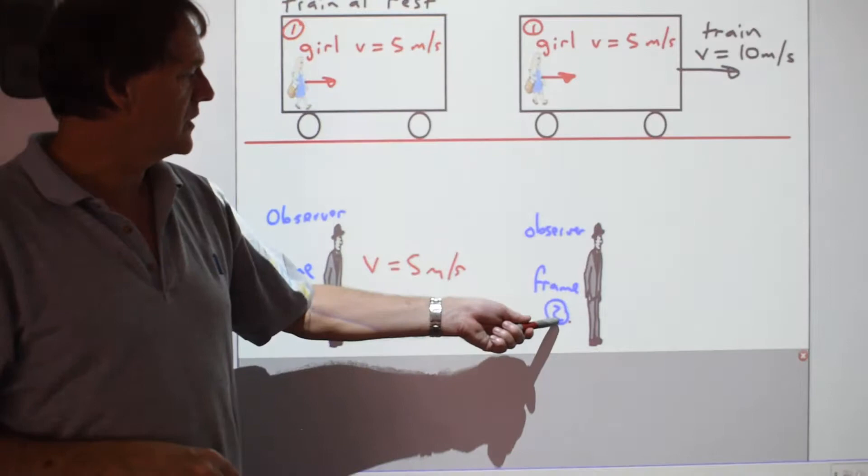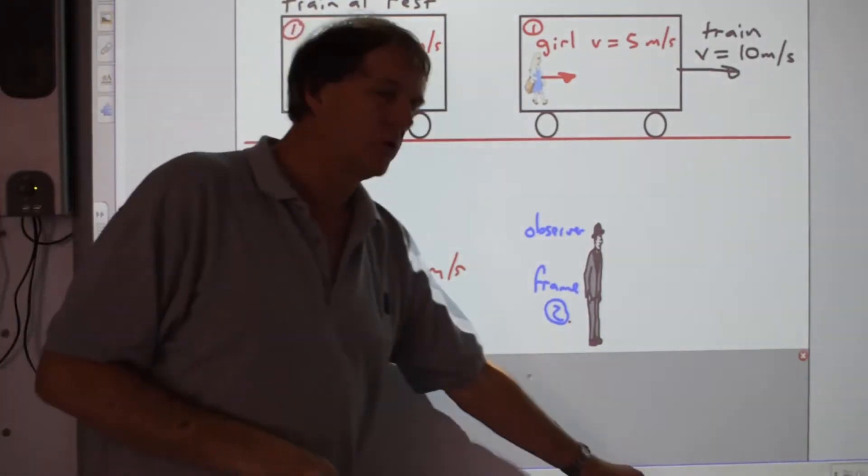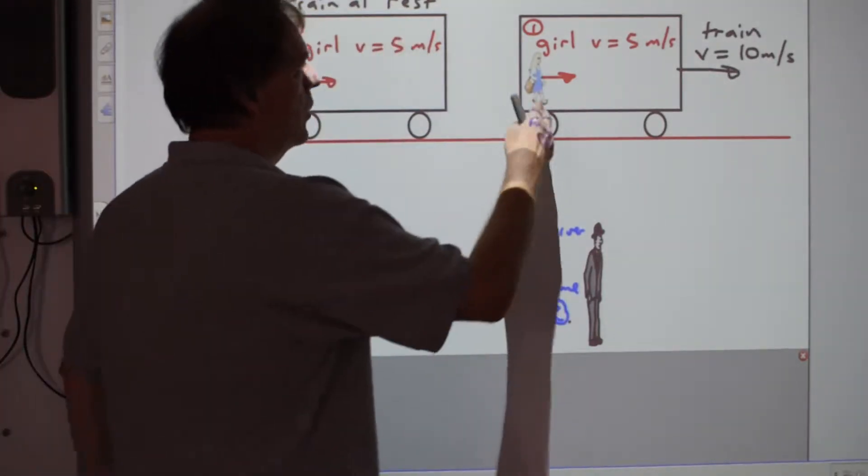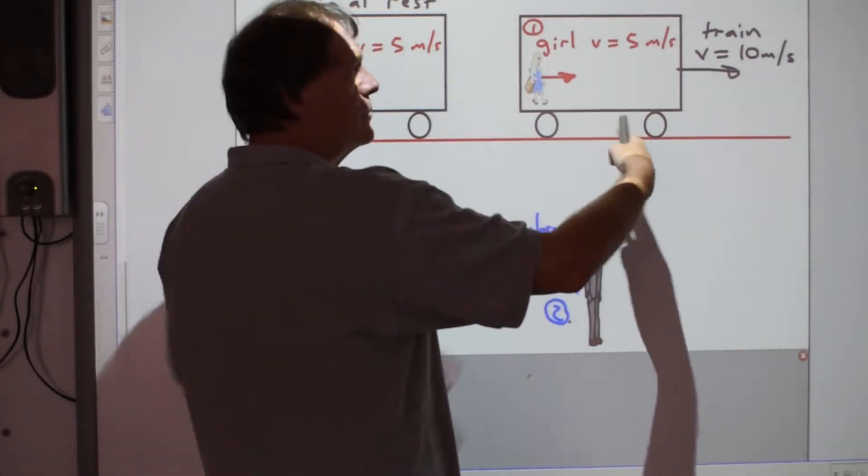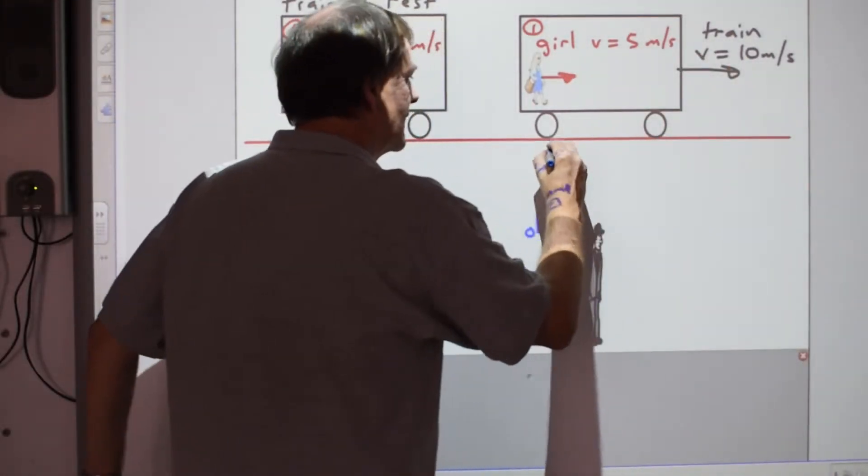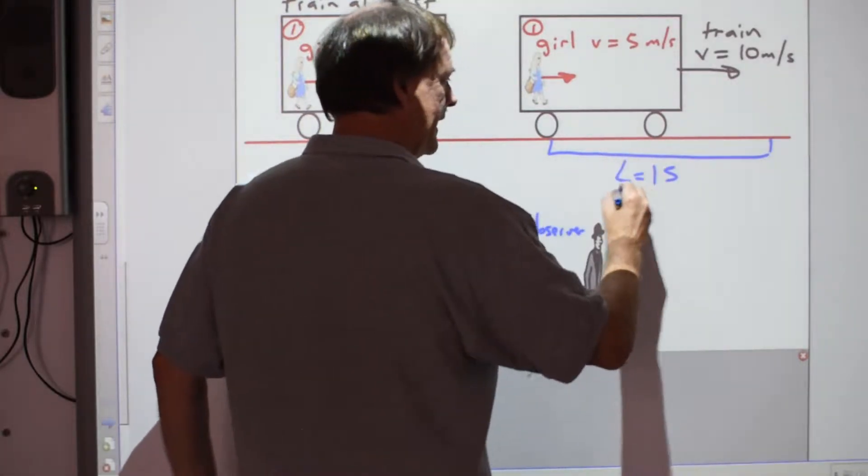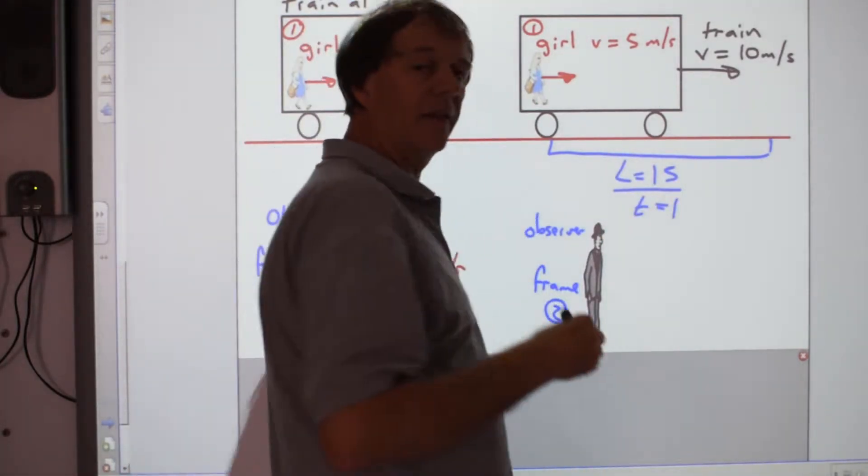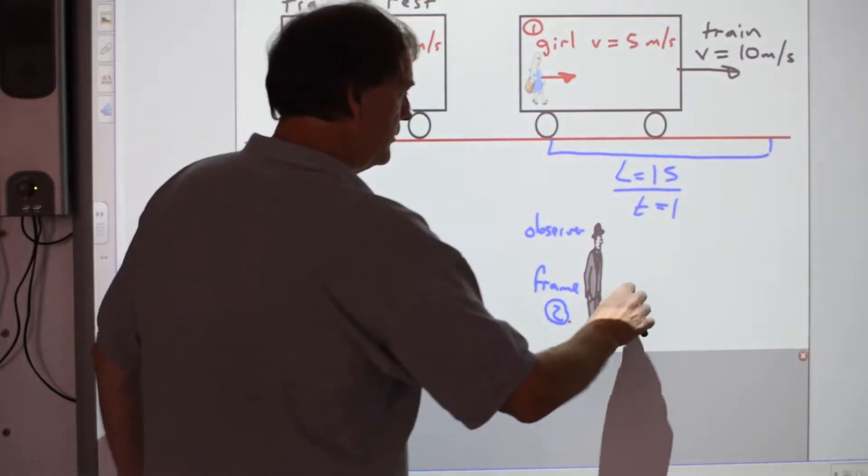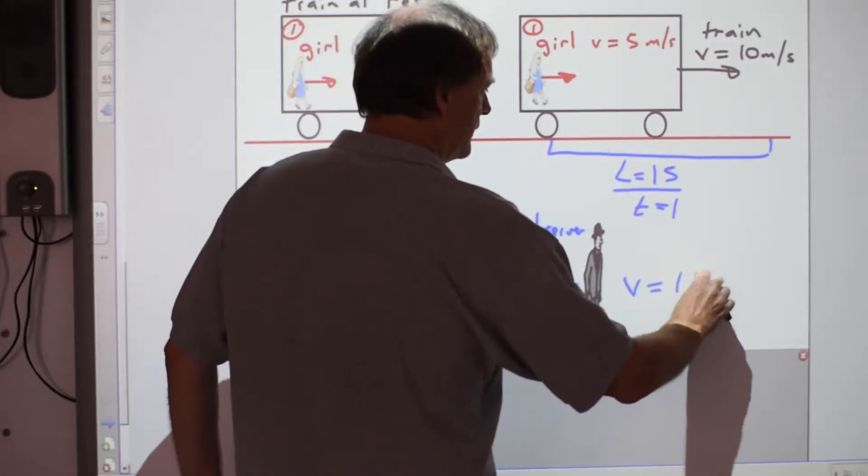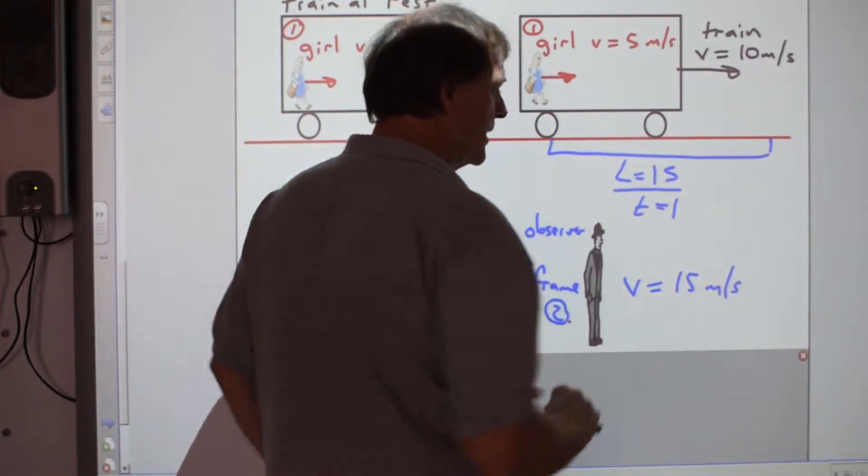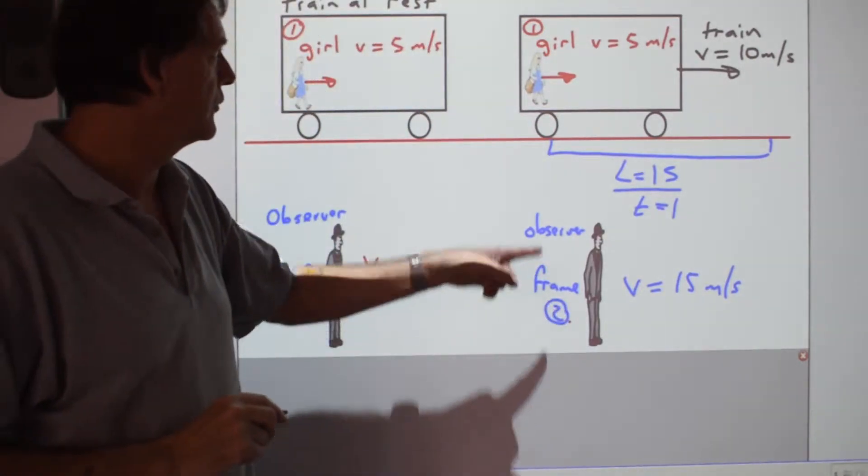But the outside observer here in frame two would record that differently, because they'd see that while she was walking five metres during that second, the train moved forwards ten metres, so the length was fifteen metres in length. If you do that at a time of one second, that's fifteen metres per second. So for this person, they've observed the velocity to be fifteen metres per second. Relative to them, they get a different result to relative to the girl.